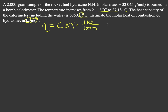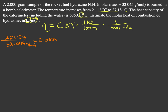Then you want it in moles, so you multiply by 1 over the moles of hydrazine that you have. To find the moles, we take 2.000 grams of hydrazine divided by 32.045 grams per mole, which is the molar mass. That gives you 0.0625 moles of hydrazine.